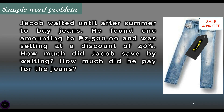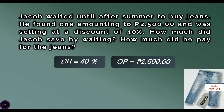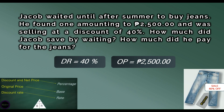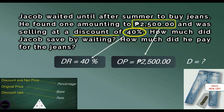Let's try to solve this sample word problem. Jacob waited until after summer to buy jeans. He found one amounting to P2,500, selling at a discount of 40%. How much did Jacob save by waiting? How much did he pay for the jeans? The P2,500 is the original price that represents the base, 40% is the discount rate, and the discount amount is unknown.